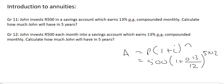In Grade 12 it's slightly different. John invests 500 Rand each month into a savings account which earns 13% compounded monthly. Calculate how much John will have in five years.